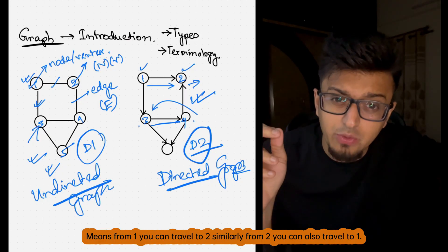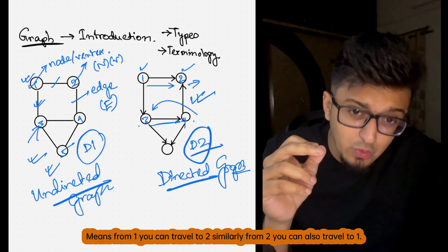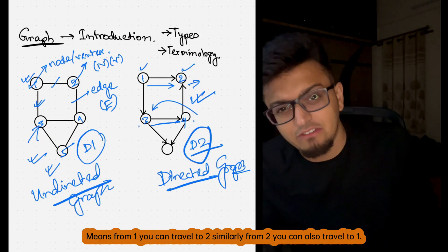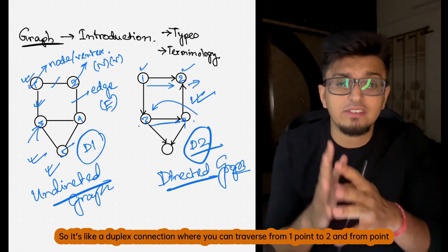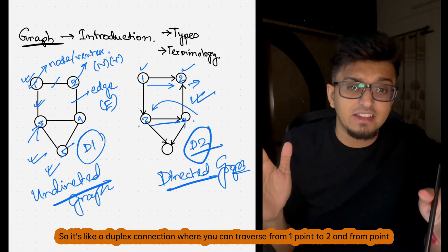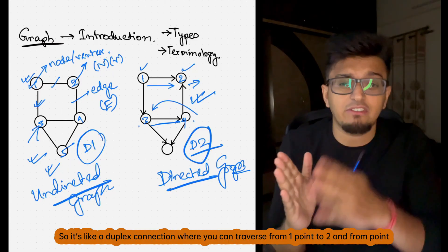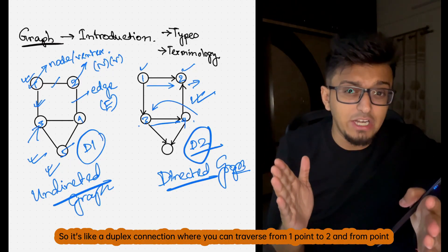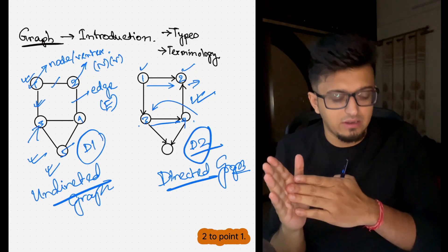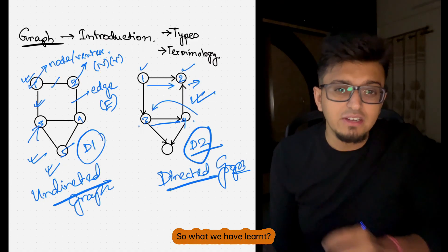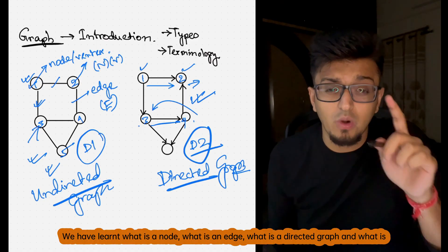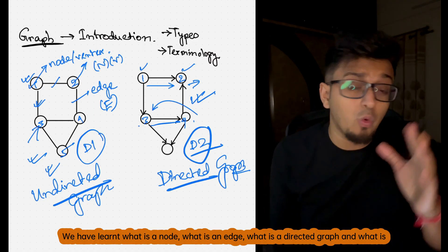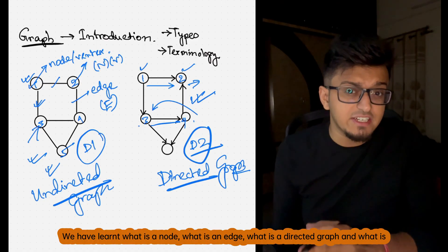In an undirected graph, from one you can travel to two and similarly from two you can also travel to one — it's like a duplex connection where you can traverse from one point to another in both directions. So what we have learned: what is a node, what is an edge, what is a directed graph, and what is an undirected graph.